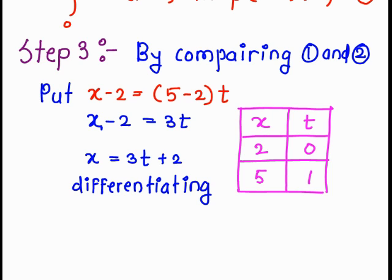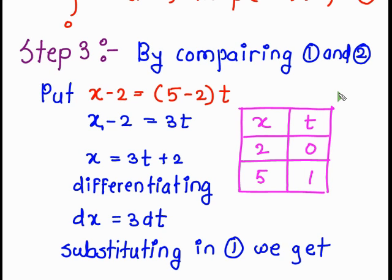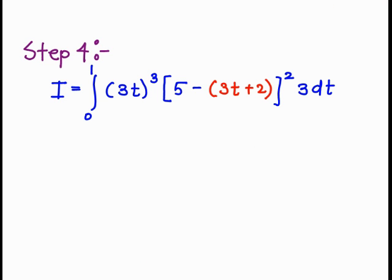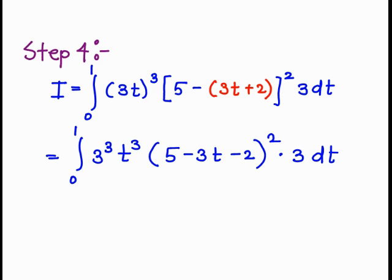Now, x equals 3t plus 2. Differentiating, dx equals 3 dt. Substituting into equation 1: the value of (x minus 2) is 3t, the value of (5 minus x) is 5 minus (3t plus 2), and dx is 3 dt. After opening the bracket, (5 minus 3t minus 2) raised to 2 times 3 dt.